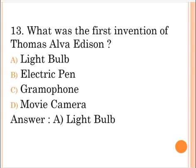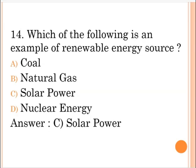Next question: What was the first invention of Thomas Alva Edison? A. Light bulb, B. Electric pen, C. Gramophone, D. Movie camera. The correct answer is option A, Light bulb.